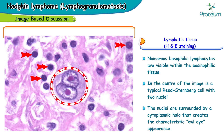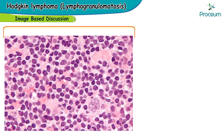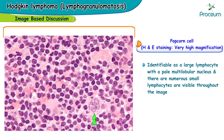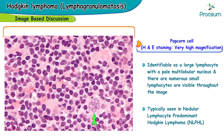The nuclei are surrounded by a cytoplasmic halo that creates the characteristic owl's eye appearance. You can clearly appreciate a popcorn cell, identifiable as a large lymphocyte with a pale multi-lobular nucleus, and there are numerous small lymphocytes visible throughout the image. These popcorn cells are typically seen in nodular lymphocyte predominant Hodgkin's lymphoma.